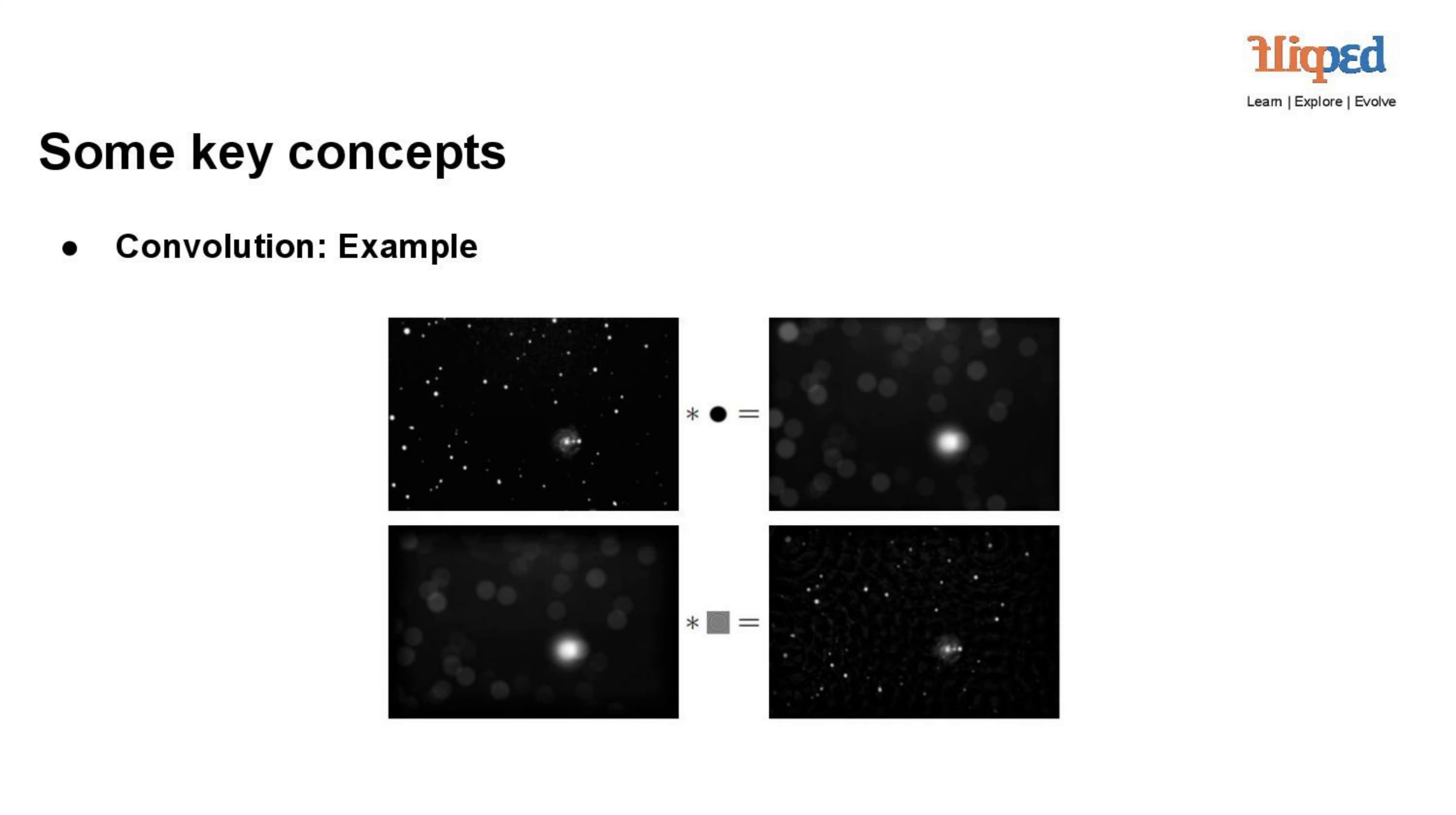Convolution with dark circle: In the first step, the original image is convolved with a kernel, also known as a filter, that represents a dark circle. This convolution operation blends the original image with the properties of the dark circle, causing the stars to be obscured and creating a blurry effect. The result is a blurry image where the stars appear less distinct and the dark circle is prominent.